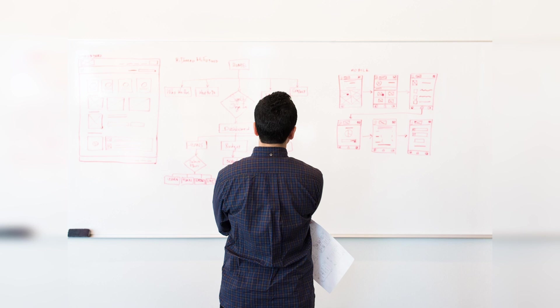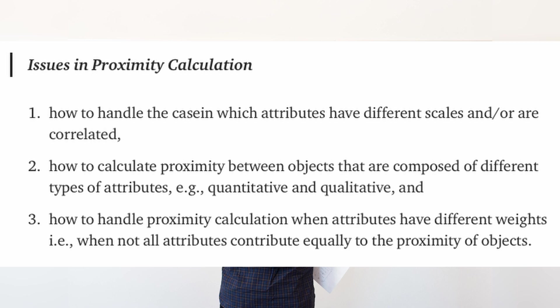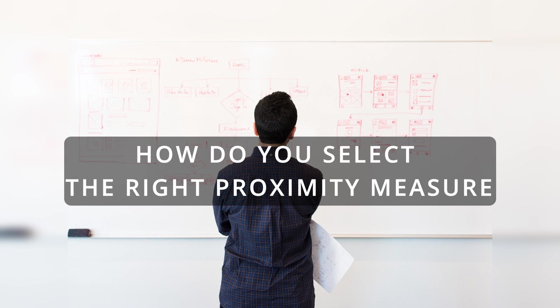Now we should focus on potential issues faced in proximity calculations. The first issue is how to handle attributes that have different scales or are correlated with each other. The second is how to calculate proximity between objects composed of different types of attributes — for example, a data object can have both quantitative and qualitative attributes. The third issue is how to handle proximity calculation when attributes have different weights, i.e., when all attributes do not contribute equally to the proximity of objects. This leads to the question: how do you select the right proximity measure?